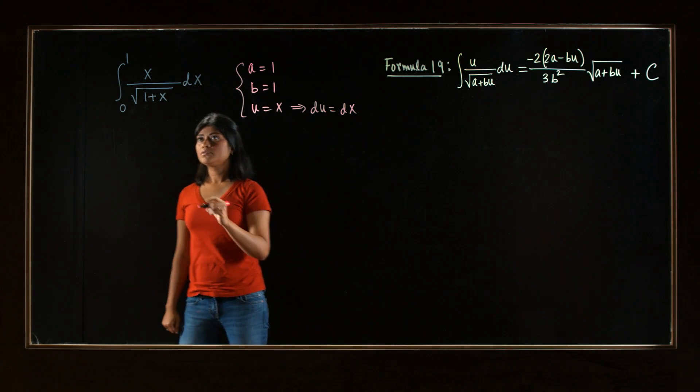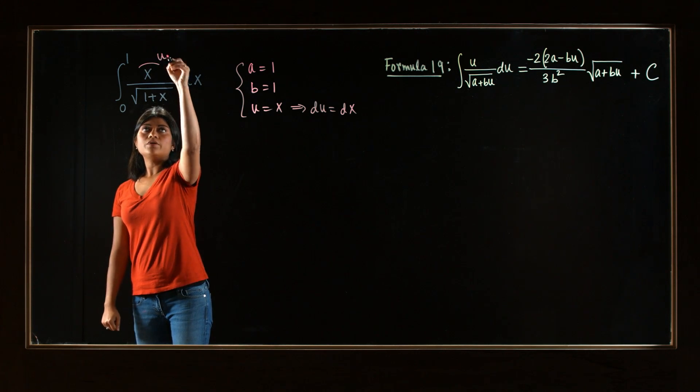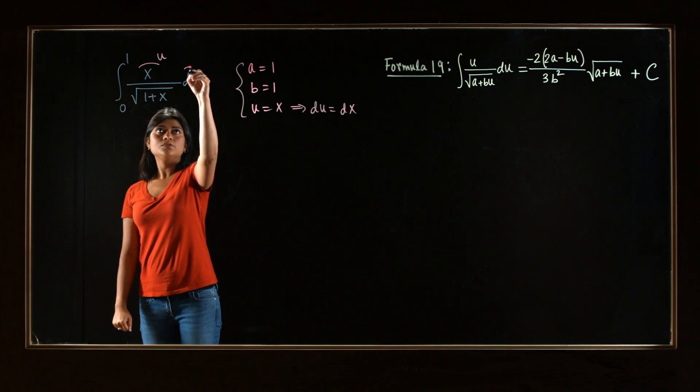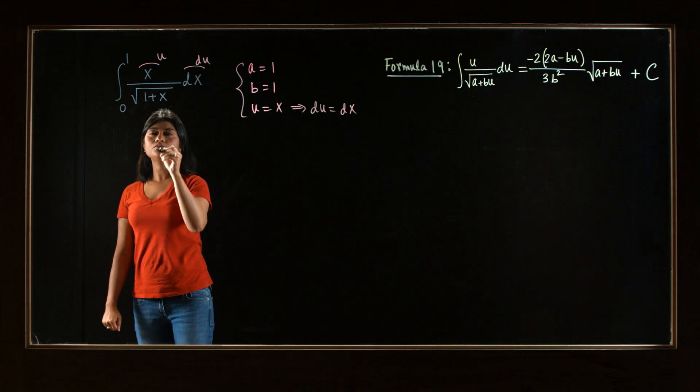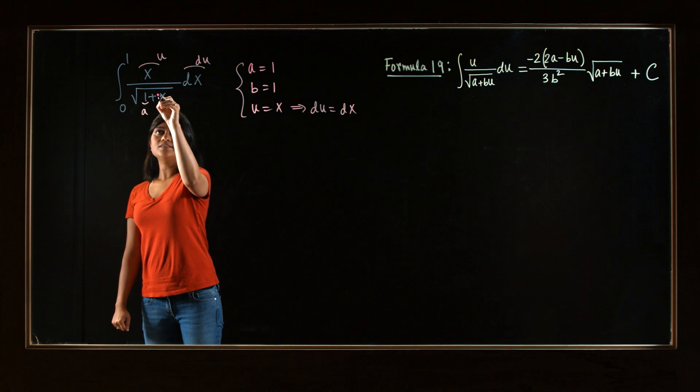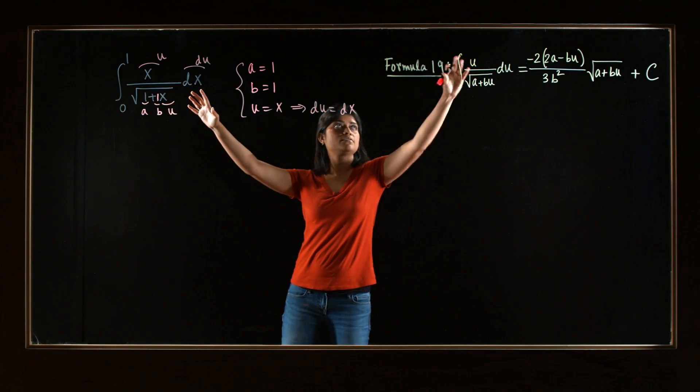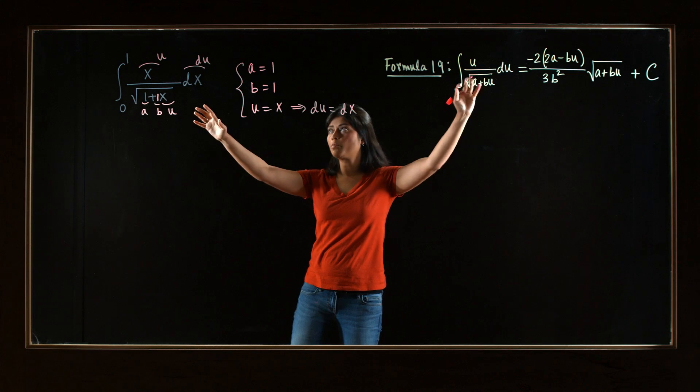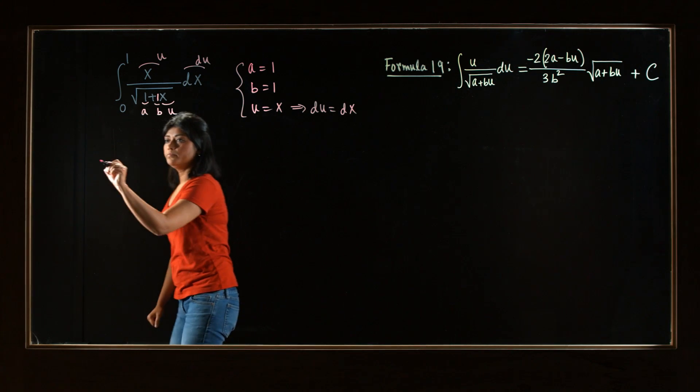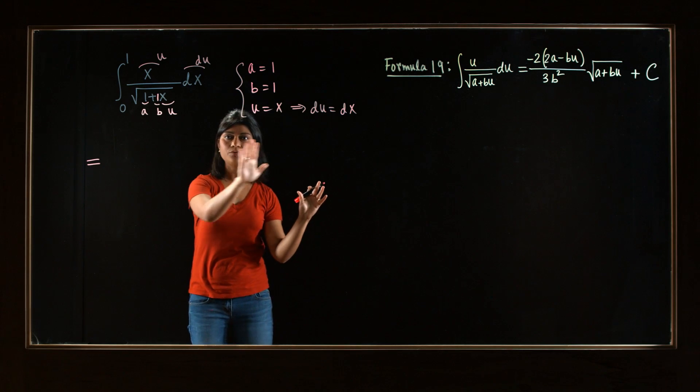All right. So we can write x to be u, dx to be du. a is right here, and b is 1 right here. And x is u. So see, it looks exactly like this expression in the left, in the formula. And so, we can just apply the formula and write it down here.